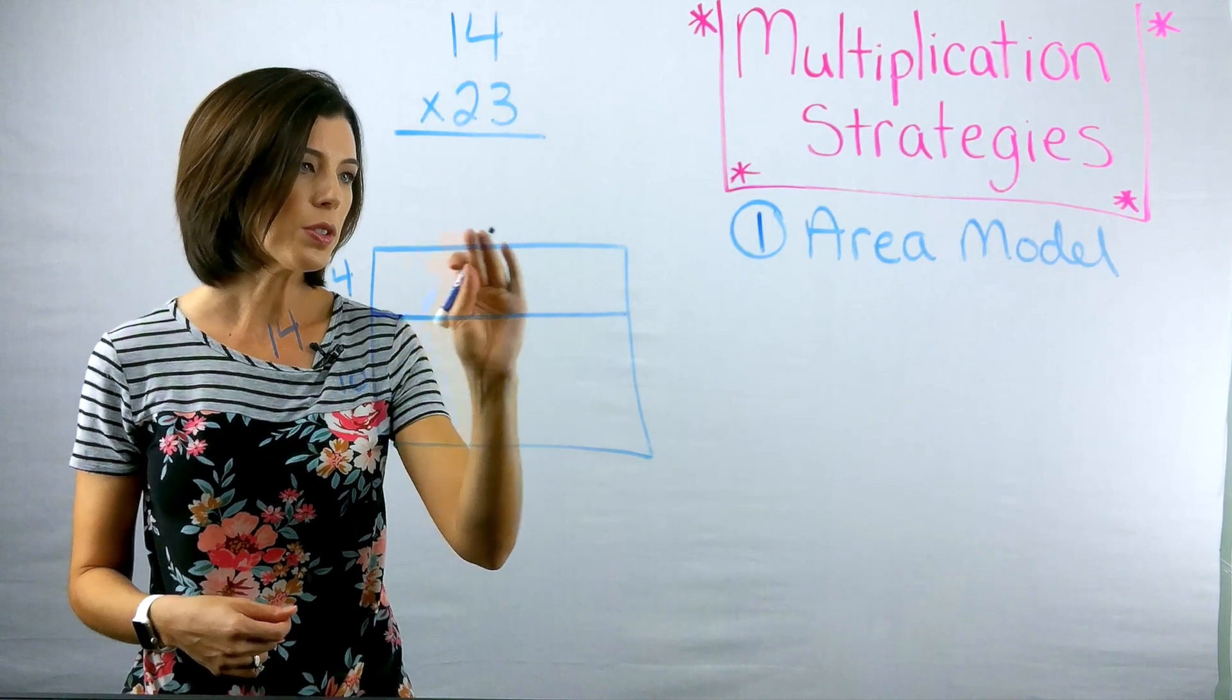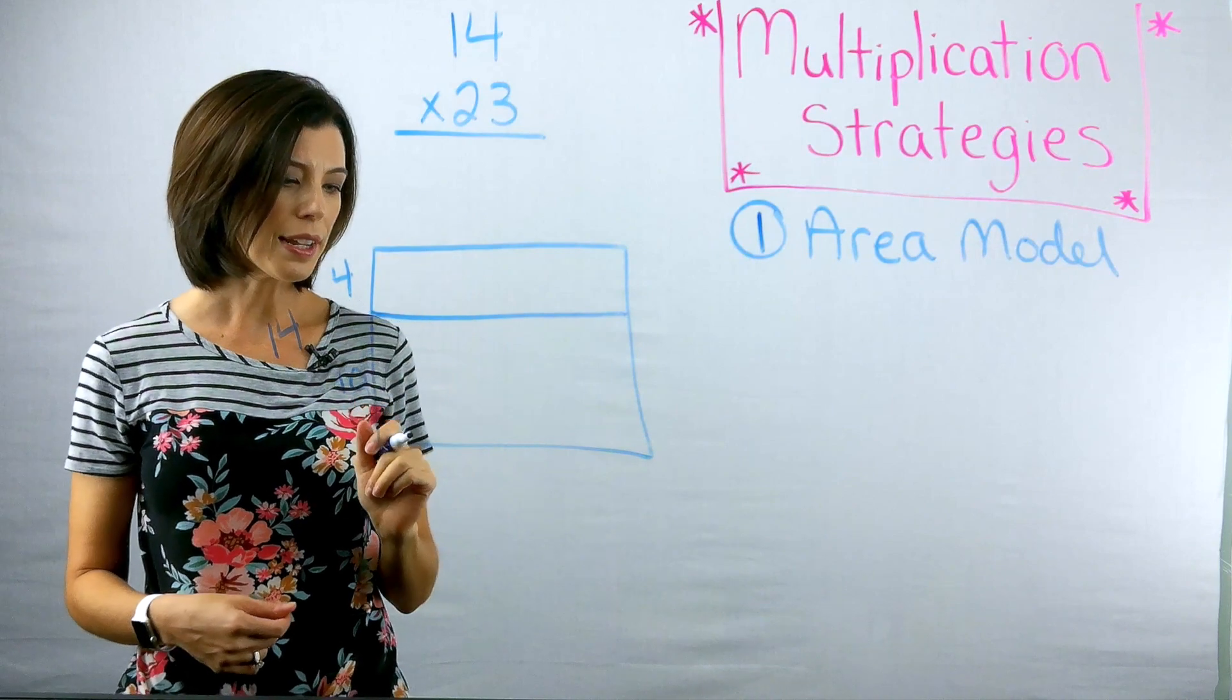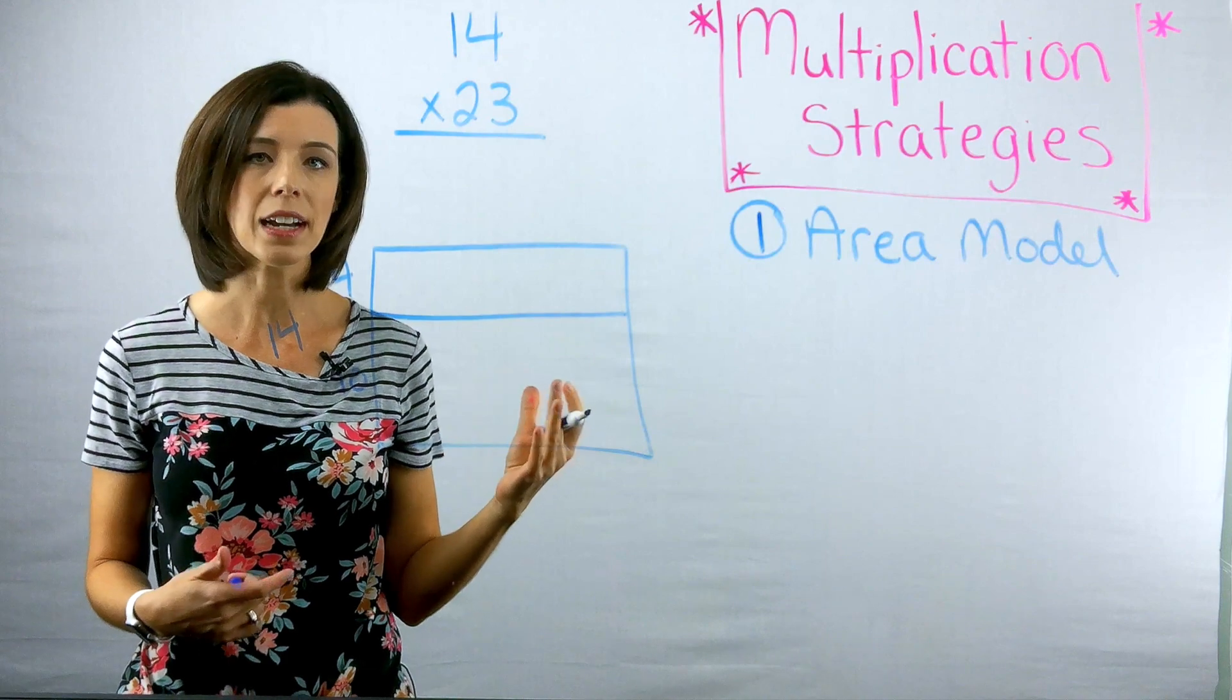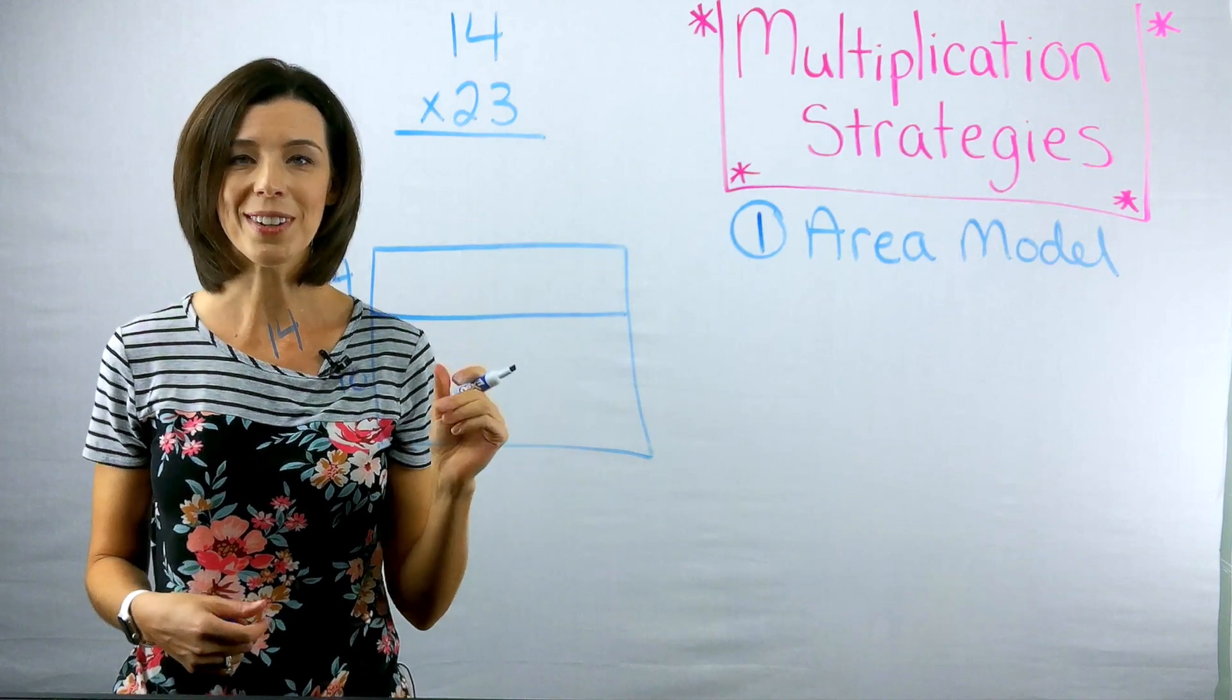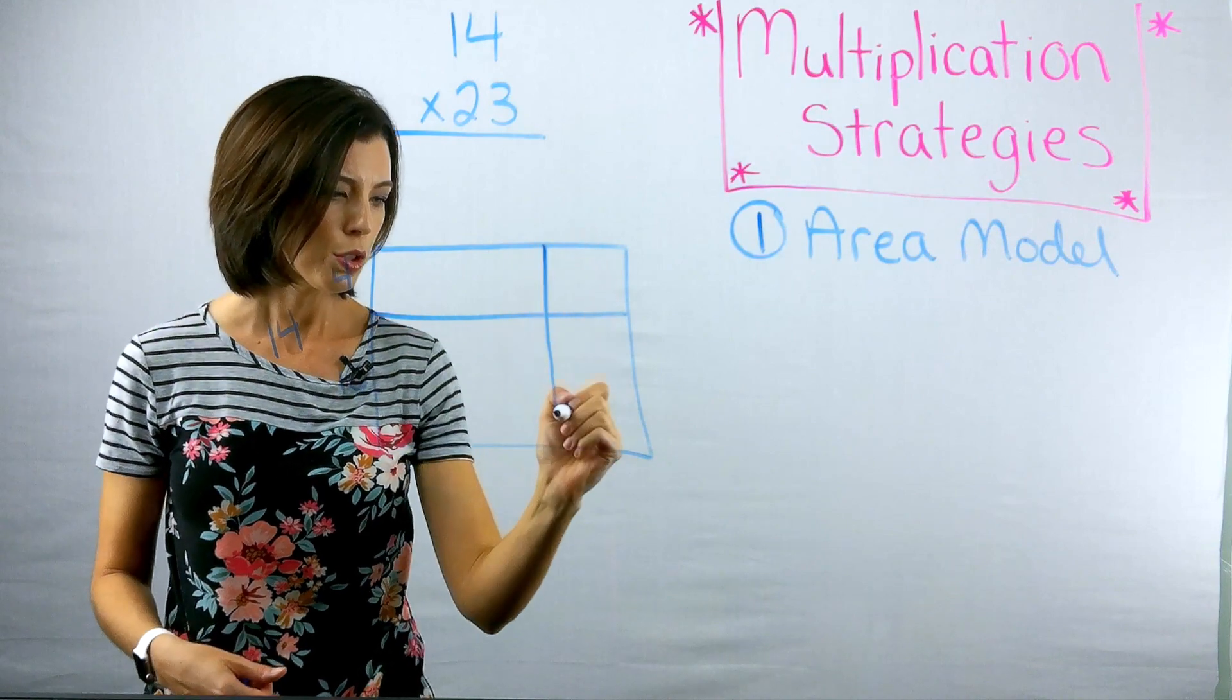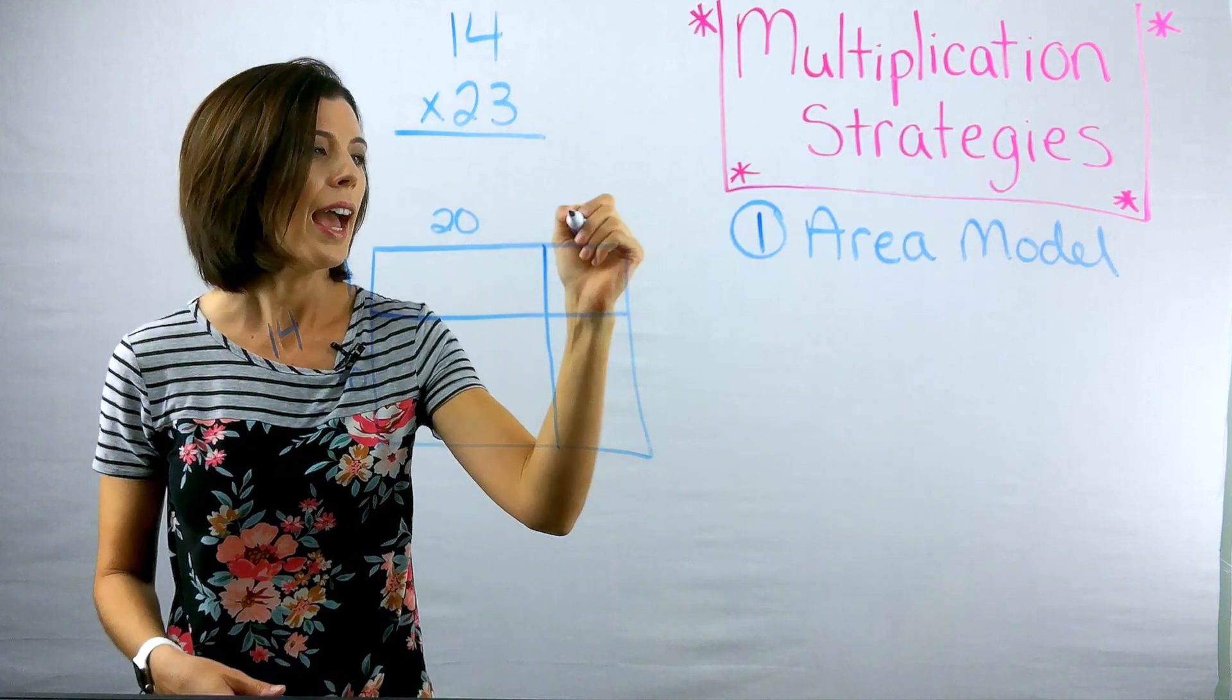Next, I'm going to use the other length of my room to make 23. Now again, I could break that up into anything I want as long as it equals 23. I'm going to break it up by place value. So I'm going to do 20 and three.